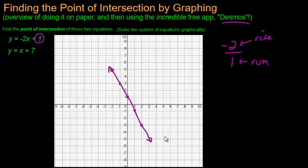So, let's look at the other line here. The y-intercept is 7, so I'm going to put a spot right here. Plot that point.